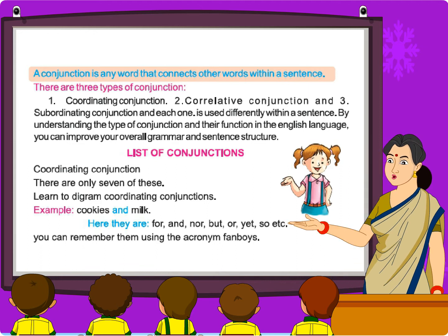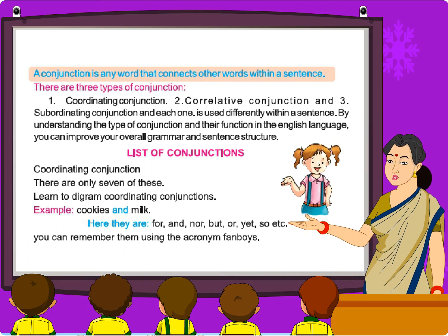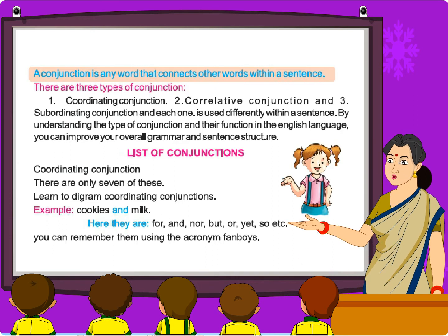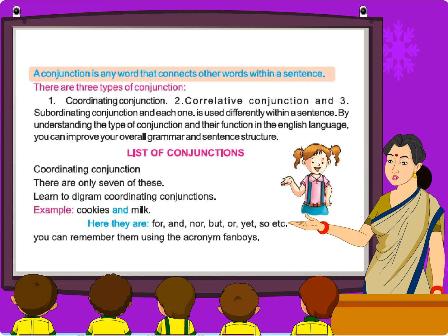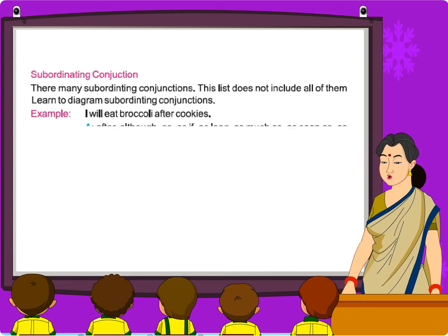List of conjunctions. Coordinating conjunctions: there are only seven of these. Learn to diagram coordinating conjunctions. Example: cookies and milk. Here they are — for, and, nor, but, or, yet, so. You can remember them using the acronym FANBOYS.